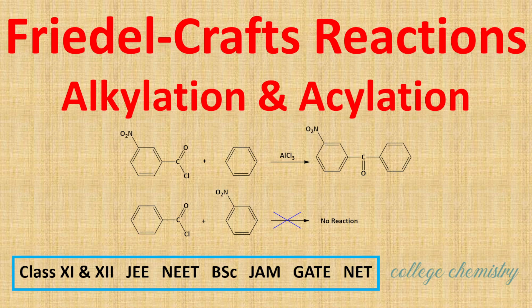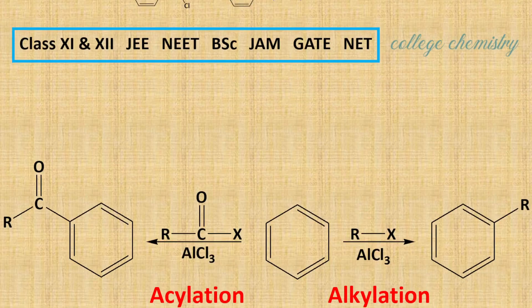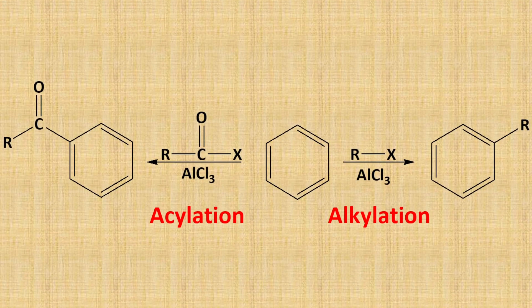Hello everyone. In this video, I have discussed the reaction and mechanism of Friedel-Crafts alkylation and Friedel-Crafts acylation. These two are examples of electrophilic substitution reaction. Friedel-Crafts alkylation places an alkyl group on the aromatic ring, while Friedel-Crafts acylation places an acyl group on the aromatic ring. These two reactions allow the construction of larger organic molecules by adding alkyl or acyl side chains on the aromatic ring.